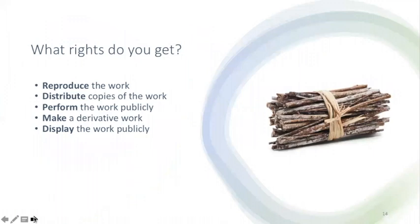So what rights do you get when you own a copyright? Think of copyright as a bundle of sticks — a type of property right made up of a number of different rights. In general, copyright grants rights to reproduce the work, distribute copies of the work, perform the work publicly, make a derivative work, and display the work publicly. The owner of this bundle of sticks can remove a single stick and give it to somebody else while still holding on to the rest of the sticks. This is analogous to copyright because the copyright owner can license a work to one party to reproduce it and sell it to the general public, while still maintaining rights to license to anyone else.